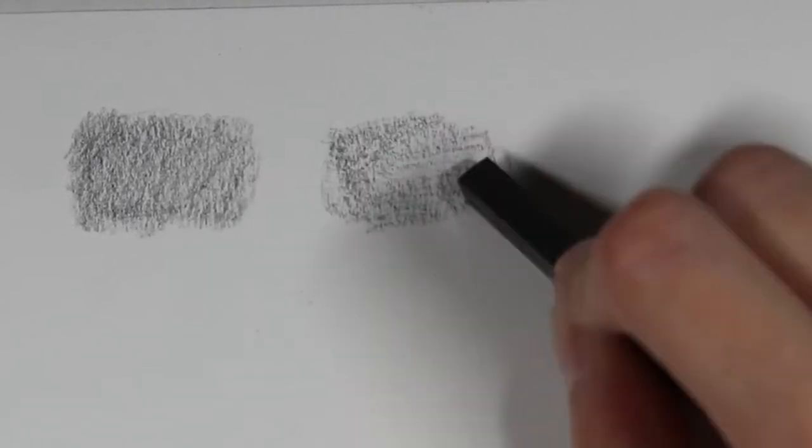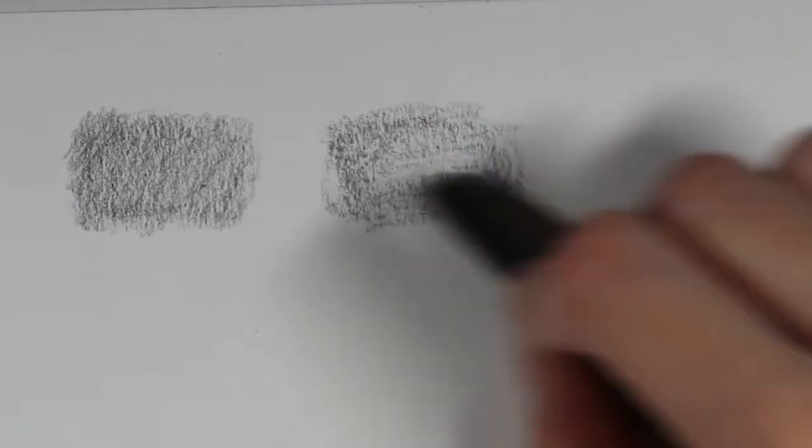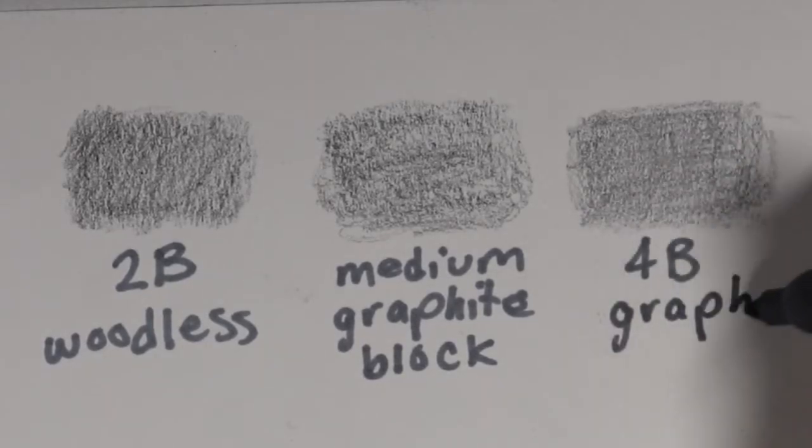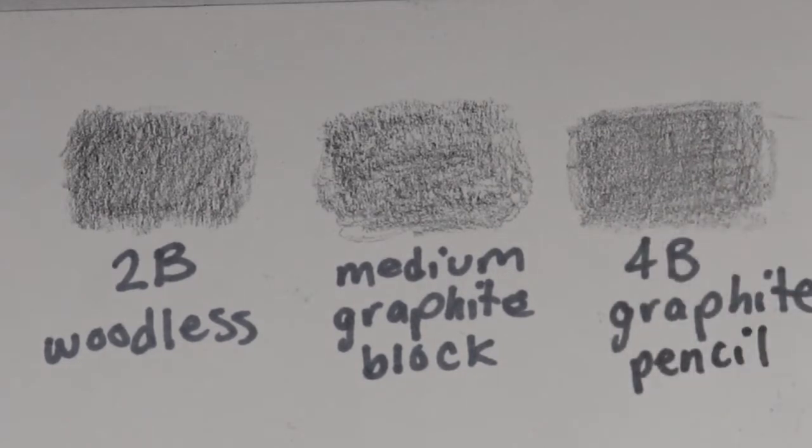So you don't get graphite on your hands and you also don't really have to worry about sharpening them like you do a normal graphite pencil since it's woodless. If you find yourself frustrated with shading large areas I would recommend this. I'm sure you can buy them in different grades besides 2B but I only personally have the 2B grade.